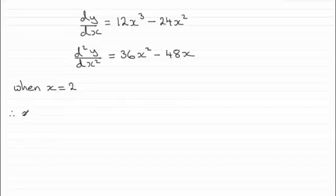we'll put, therefore, d two y by dx squared equals, and if we do that we've got 36 times two squared minus 48 times two,